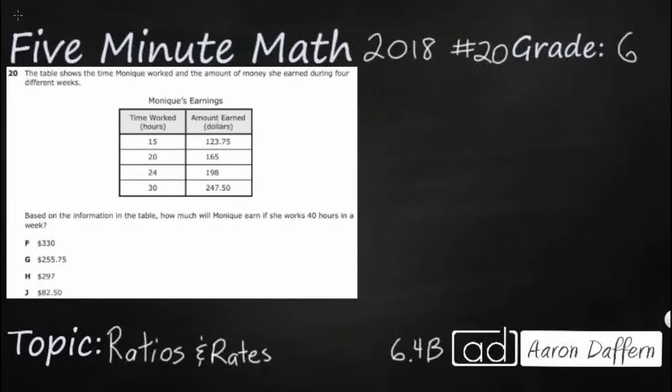So we have a table here showing Monique and how much money she is earning for different weeks. You notice the amount of time that she works each week actually increases, and so does her pay, which makes sense. The more money you get usually is related to you getting more hours. So based on the information in the table, how much will Monique earn if she works 40 hours?